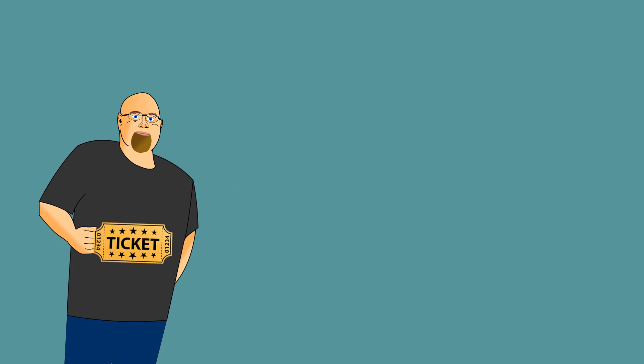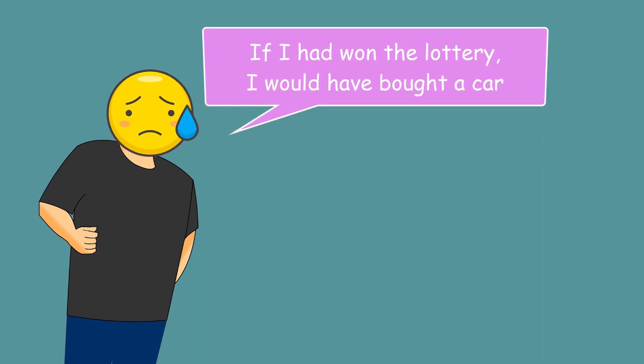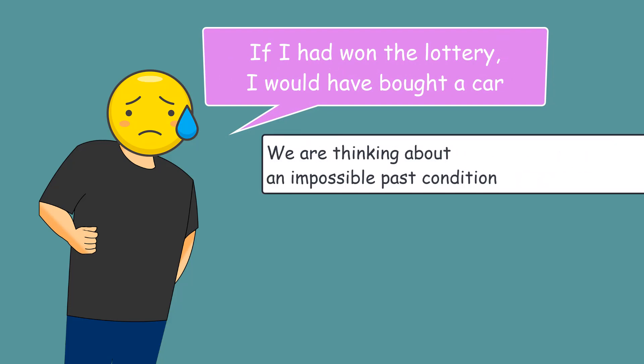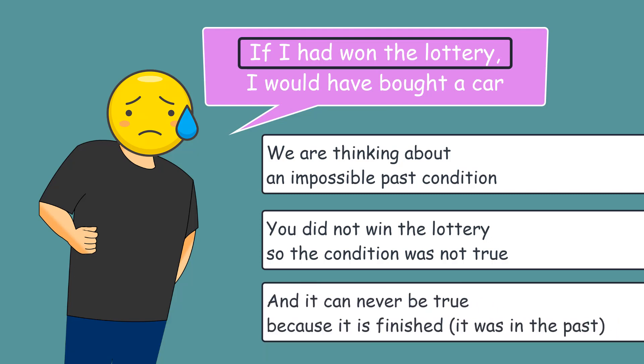Last week you bought a lottery ticket, but you did not win. If I had won the lottery, I would have bought a car. Notice that we are thinking about an impossible past condition. You did not win the lottery, so the condition was not true, and that particular situation can never be true because it is finished.